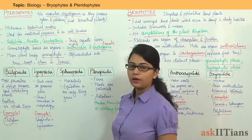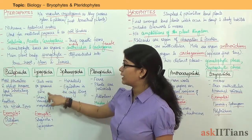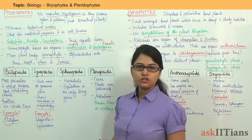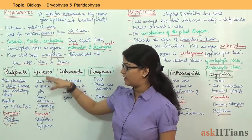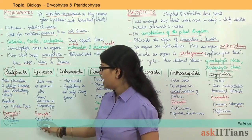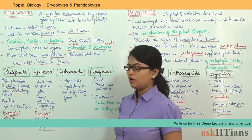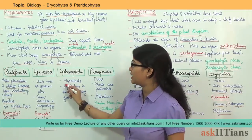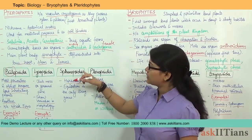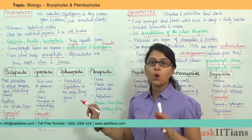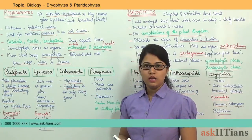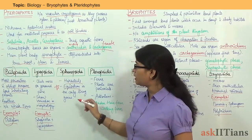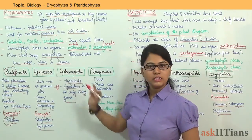Next is Lycopsida, also known as club mosses or ground pines. They show variation in morphology — there is no single particular morphological category. Examples are Selaginella and Lycopodium. Sphenopsida are also known as horsetails. Under Sphenopsida, Equisetum is the only living genus — this is a very important point.